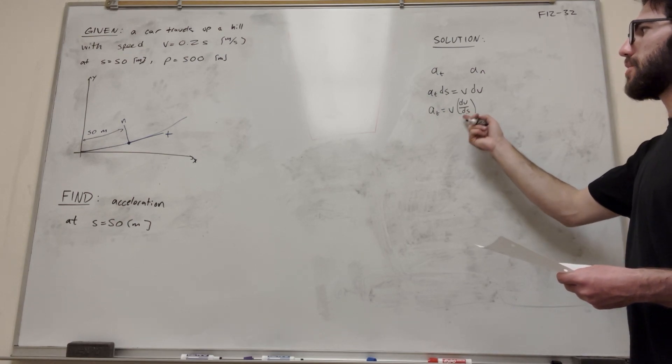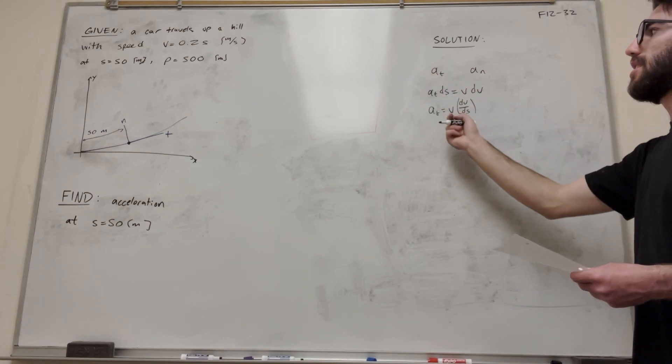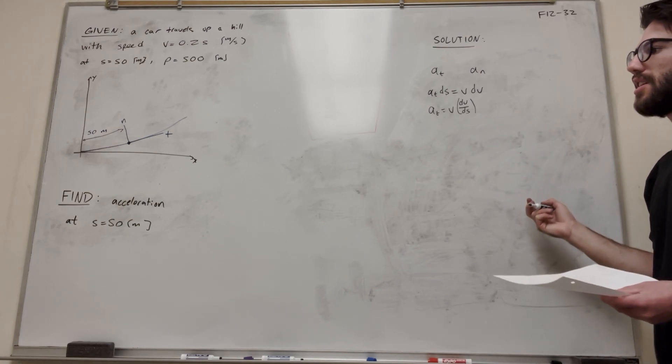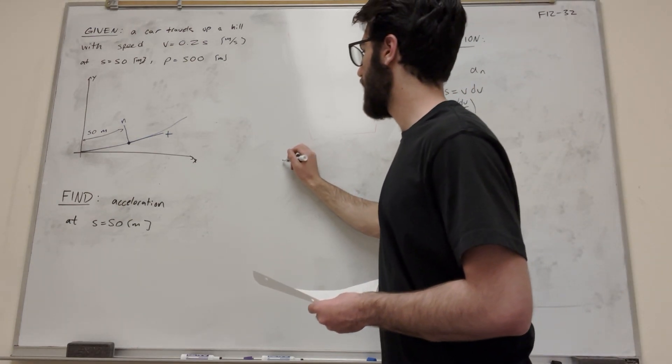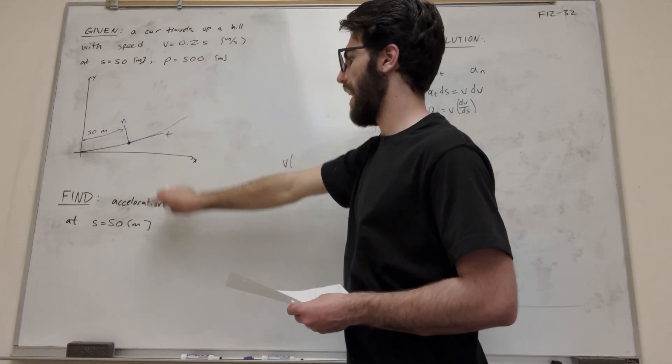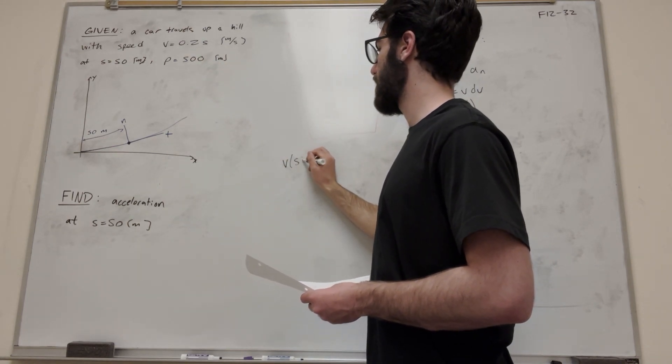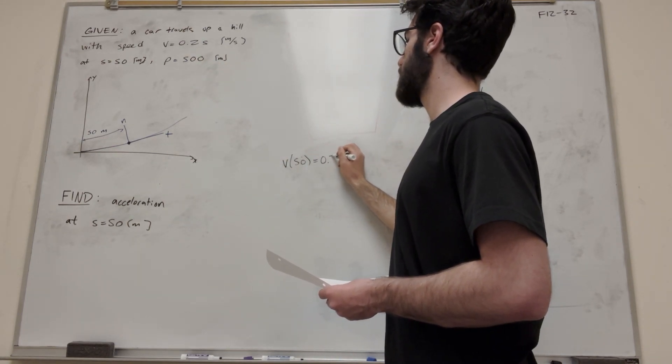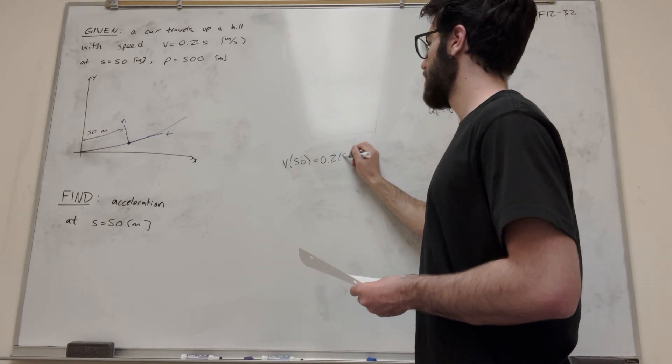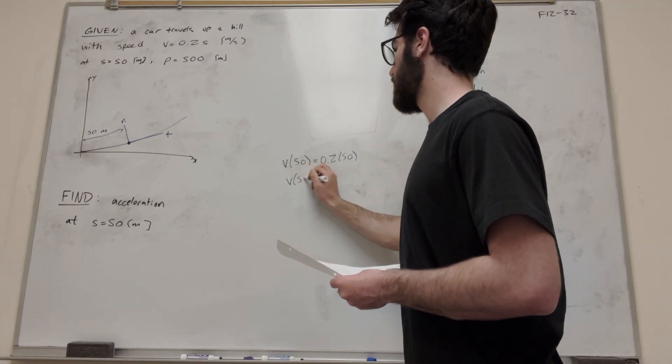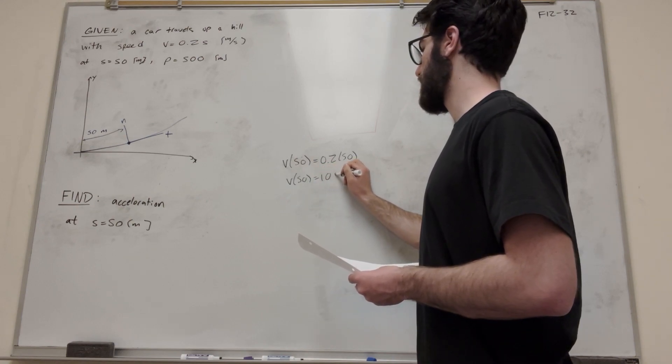So if we're going to solve for this, we can take the derivative, that's going to be easy, but we need to find the velocity at this point. We're not given the velocity. So let's first start by doing that. So we're trying to find the velocity at 50 meters, so velocity of 50 is equal to 0.2, and then plug in 50 for s. So this is going to give you velocity of 50 is equal to 10 meters per second.